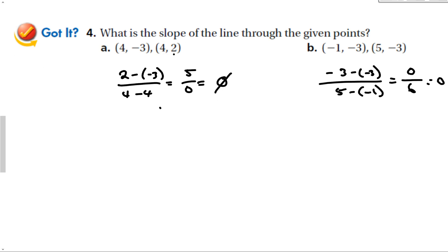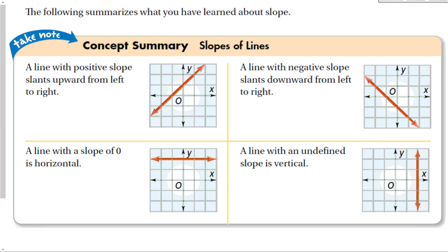Slopes of vertical lines are undefined; slopes of horizontal lines are 0. Applying this: (2 − (−3)) / (4 − 4) = 5/0, which is undefined — a vertical line. And (−3 − (−3)) / (5 − (−1)) = 0/6 = 0 — a horizontal line. Summary: positive slope goes up left to right, negative slope goes down, horizontal line has slope 0, vertical line has undefined slope.